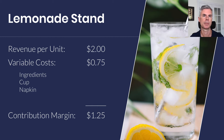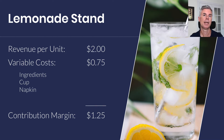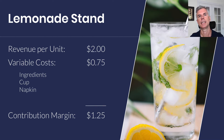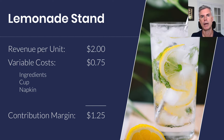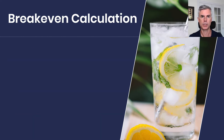The contribution margin is $2 minus 75 cents, which equals $1.25. That's the money you have left over to pay the expenses of the business and hopefully have a profit at the end. From the contribution margin, we can calculate the break-even.